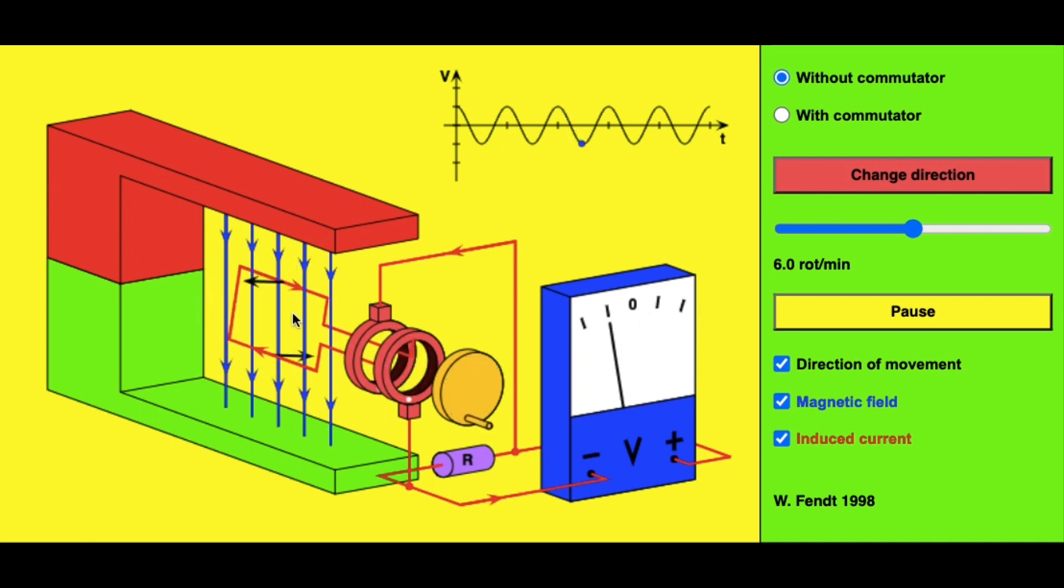Once again, we have alternating current in the internal circuit which is now converted into alternating current in the external circuit. We can see that the current ranges from zero to a maximum back to zero and then changes direction to a negative maximum before returning to zero.